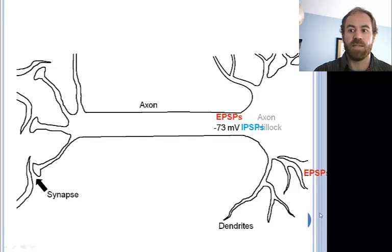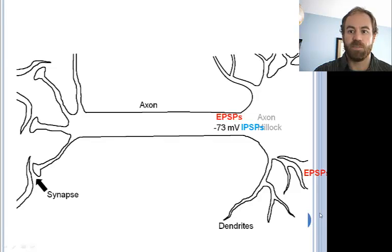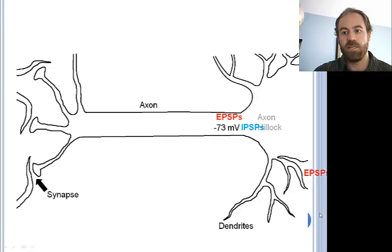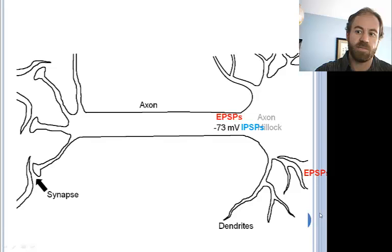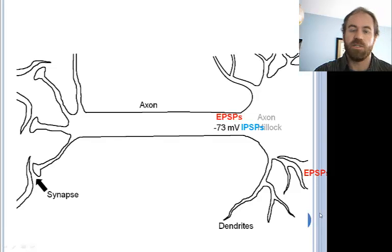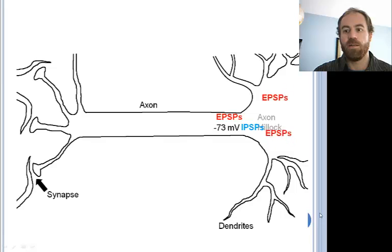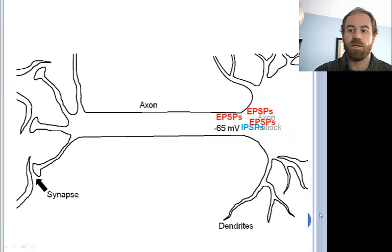It is at the axon hillock where the integration of input takes place. It is as if there's a little man with a calculator inside the axon hillock, adding the EPSPs and subtracting the IPSPs. And if and when his calculator reaches negative 65, the little man presses a button that starts a cascade of events that results in the action potential.